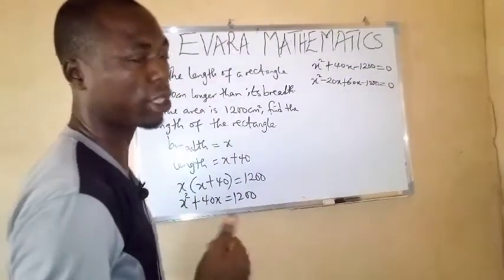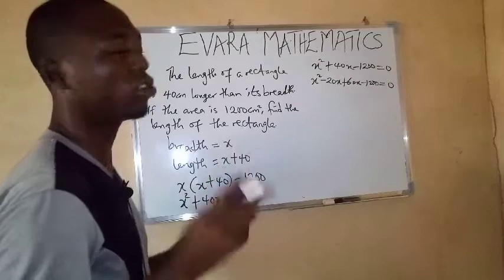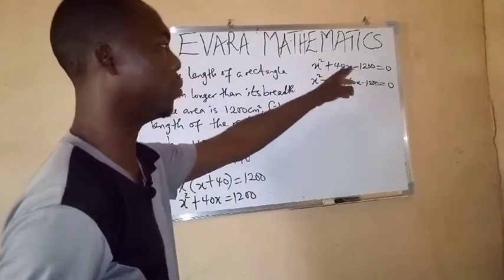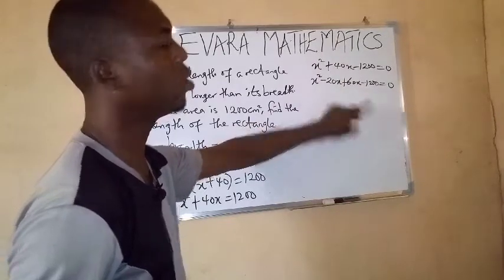Don't forget, in our previous lessons on quadratic equation, when you get those two factors, you simply remove this middle term and replace it with the two factors that you have gotten.